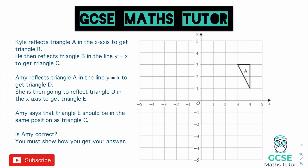We're going to break this down step by step. Starting with Kyle: he reflects triangle A in the x-axis to get triangle B. In the x-axis, starting with each corner — it's going to go here, two down, and then to there. There are four reflections to do — number one and number two for Kyle, and then number one and two for Amy — and we're going to see if they land in the same position. That reflected shape is going to be triangle B.